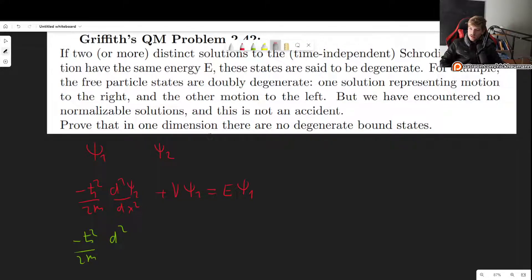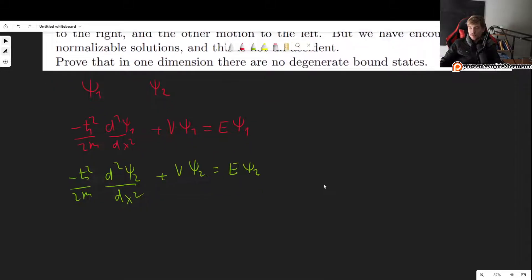So -ℏ²/2m d²ψ₂/dx² + Vψ₂ = Eψ₂. So both of these, this means that ψ₁ satisfies the Schrödinger equation with energy E, and ψ₂ also satisfies the Schrödinger equation, but with energy E also. So two states, same energy, doubly degenerate.